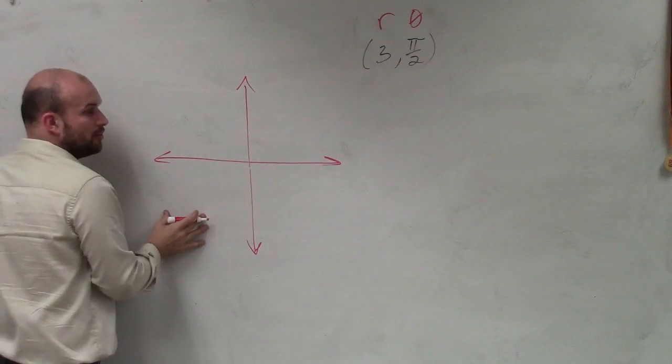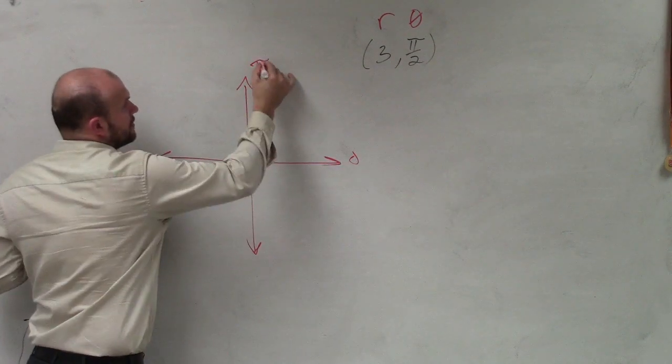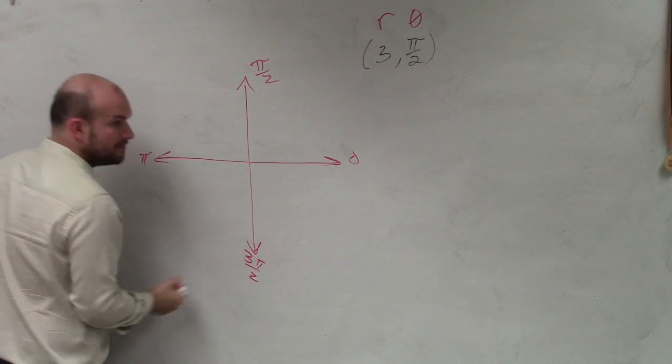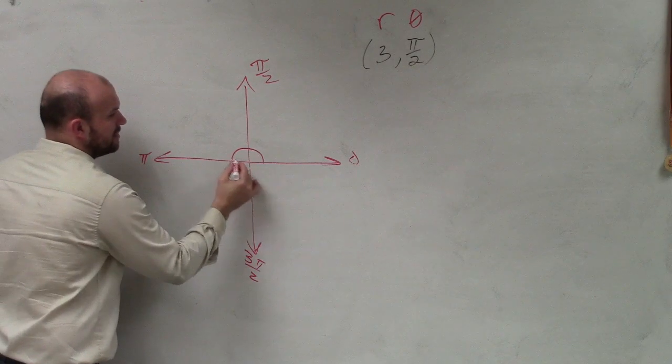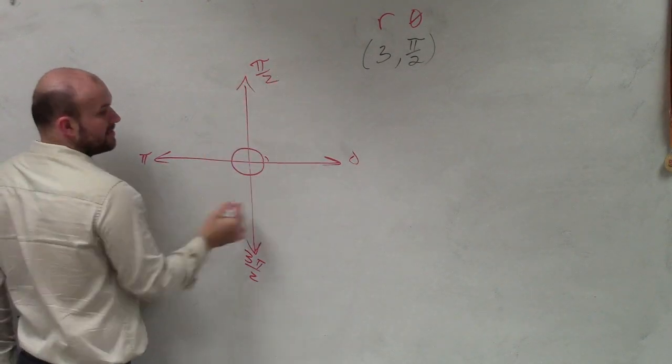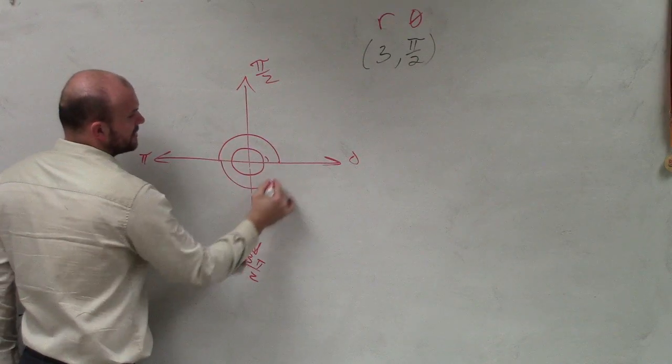So again, remember, when we're dealing with our polar coordinate system, we have 0, pi halves, pi, 3 pi over 2. And then we have our lovely unit circle that we start with, right? But this one has a radius of 3, so it's going to be three rings that we're going to go out.